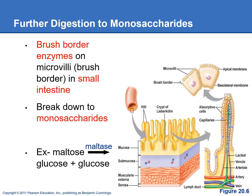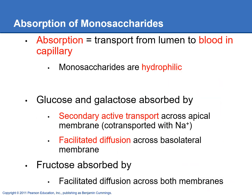To finish digesting the carbohydrates down into monosaccharides, we're going to use brush border enzymes, which are found on the microvilli in the small intestine. On the epithelial cells making up the small intestinal walls, these brush border enzymes will finish breaking the disaccharides down into monosaccharides. For example, maltase will break down maltose into two glucoses, and lactase breaks down lactose. Because the monosaccharides are hydrophilic, we transport them across the small intestinal wall using transport proteins and then put them right into the blood.